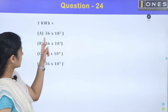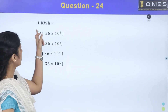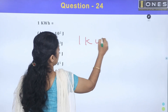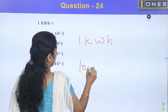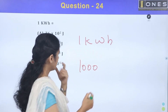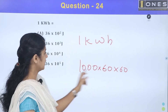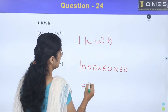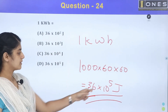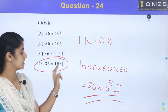1 kWh is equal to how many joules? Converting: 1 kWh = 1000 W × 3600 seconds = 60 × 60 seconds. Calculating: 6 × 6 = 36, giving 36 × 10⁵ joules. So 1 kWh equals 36 × 10⁵ joules. Option D.